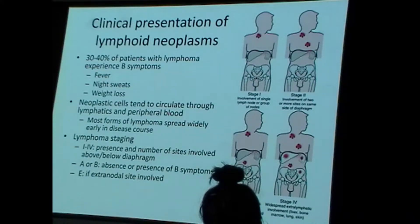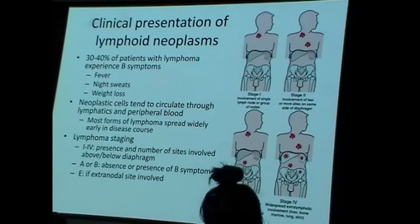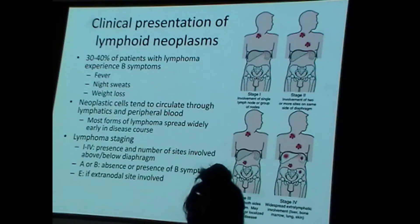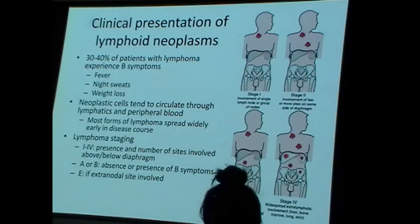We have a particular way of staging lymphomas — stage one through four — based on the extent of disease. Considering the early propensity for cancer spread, chemotherapy is almost always used in lymphomas — and this will be the same treatment modality in leukemias. If cancer is circulating throughout the bloodstream, surgical therapy is not going to work. Radiation to the whole body is possible but limited. So chemotherapy is an essential mechanism of cancer treatment for these patients.